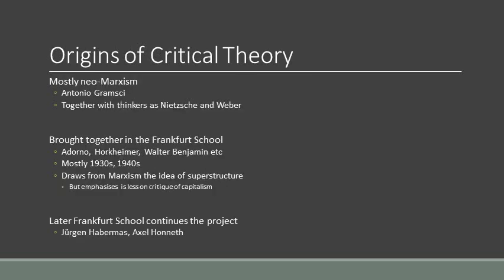The origins of critical theory mostly lie with neo-Marxism, as discussed in earlier episodes, and are very closely tied with thinkers such as Nietzsche, Weber, Hegel, and particularly Antonio Gramsci and his theory of hegemony. This line of thought was brought together in the 1930s and 40s in what has been called the Frankfurt School — thinkers such as Adorno, Horkheimer, Benjamin, and others. They drew from Marxism the idea of a superstructure: that capitalism is not just a material, mechanistic process of market exchanges, but carries with itself a cultural and social project — a project of indoctrination, or what has been called ideology, through which the material practices of capitalism legitimize themselves.